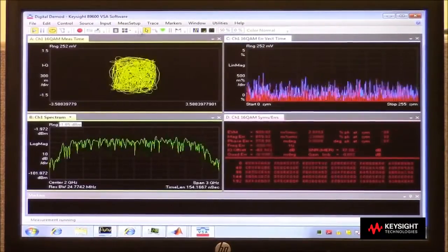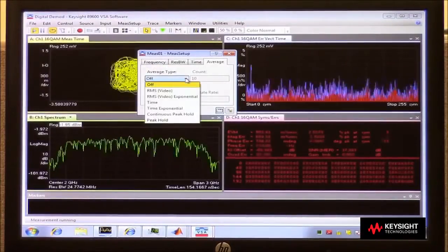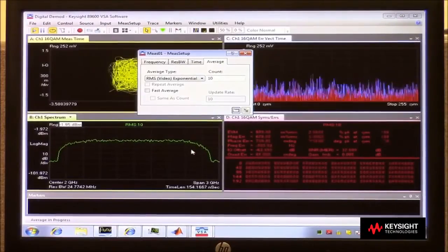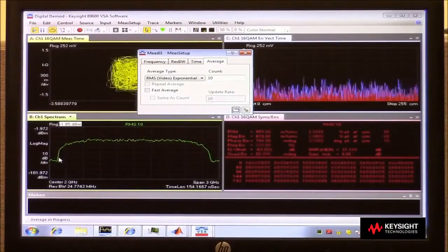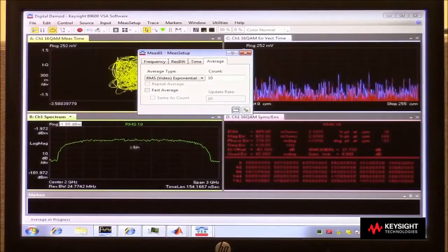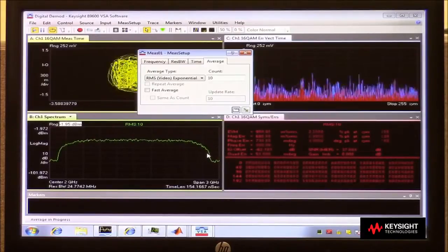One last thing I can do is turn on averaging. That should clean up our spectral response. Now we see a really nice view of our signal. We can see that it is centered up at 2 GHz, and it is 2 GHz wide from 1 GHz up to 3 GHz.